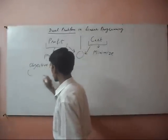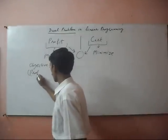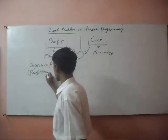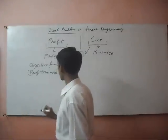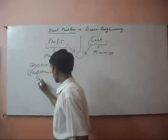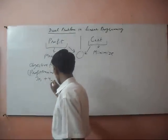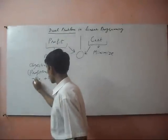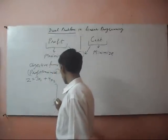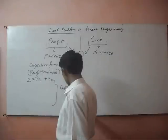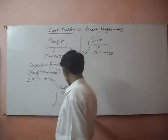Profit maximize, maximize 3x1 plus 4x2 is equal to z. If conditions are the cost. If conditions are the cost conditions,